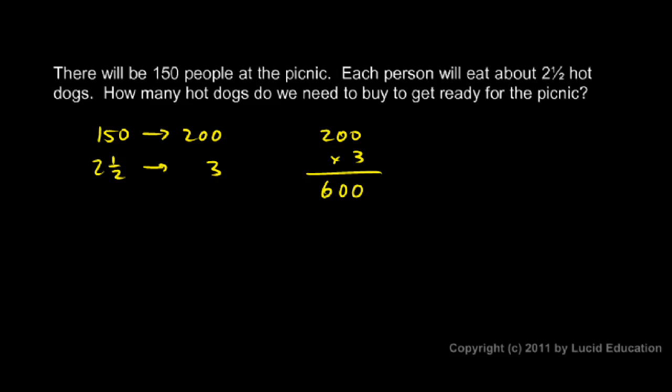It turns out that that's way too many, because I rounded each of these original numbers up. If I were to actually multiply 150 times two and a half, the actual number is 375.